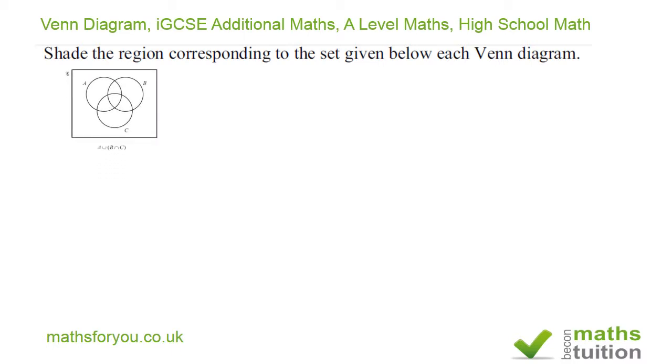Right, now the first one says A union B intersection C. Okay, so now what I've done here is to present two more diagrams here. The first one gives us B intersection C and that's what it got there.